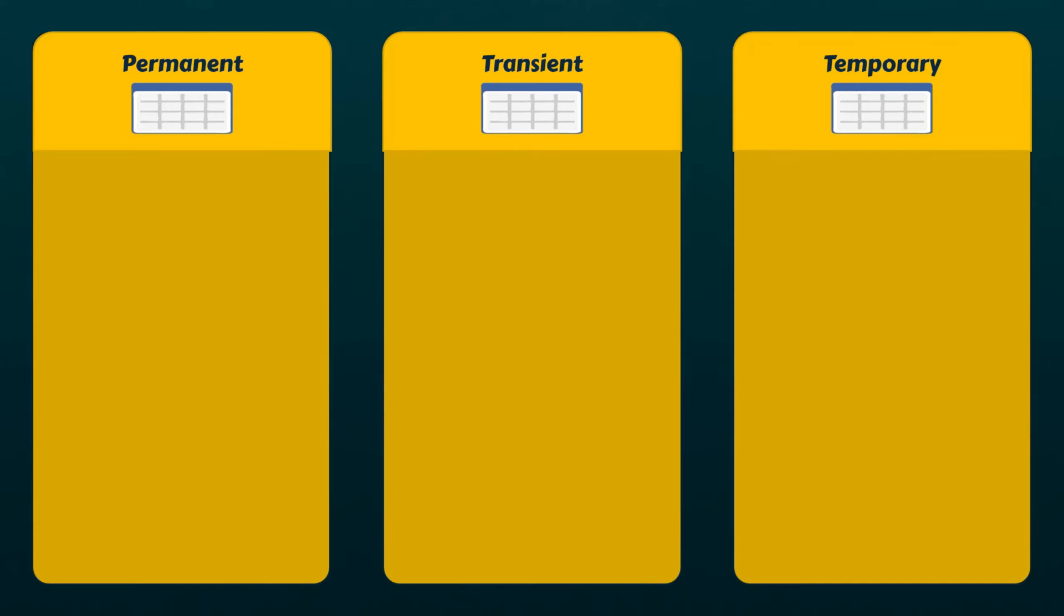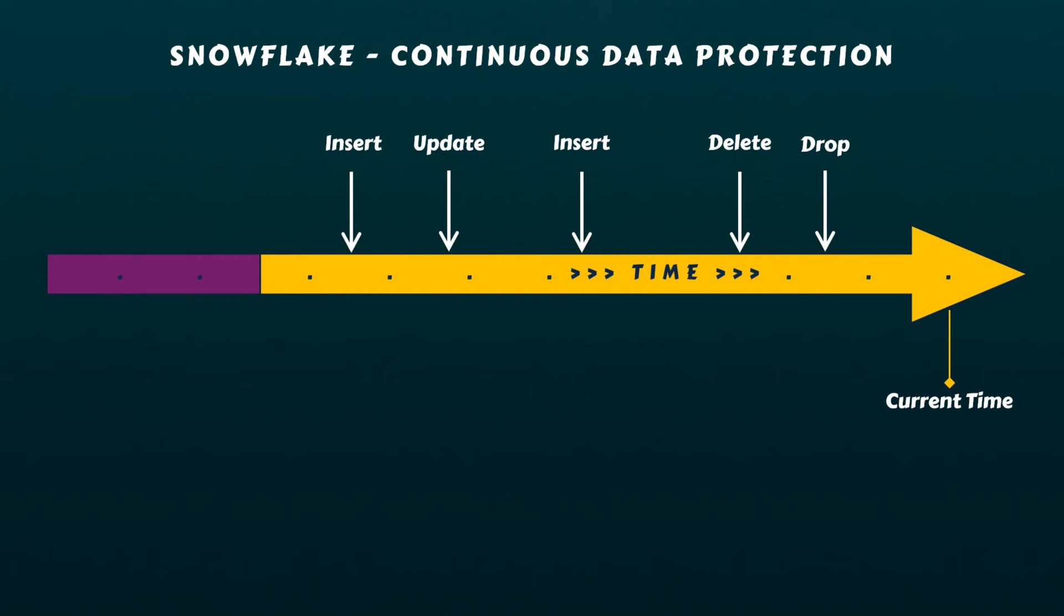Permanent tables, as the name says, store data permanently with the highest level of data protection and persistence. While we'll dive deeper into data protection features like time travel and failsafe in another video, for now just think of time travel as a feature that allows you to go back in time and recover table data as of specific dates or times in the past. With time travel enabled, you can revert your accidental or incorrect DML operations, or you can even recover an entirely dropped table. If your data falls within the time travel duration, you can access and restore it yourself without involving Snowflake support. I'll be demonstrating the same later in this video.